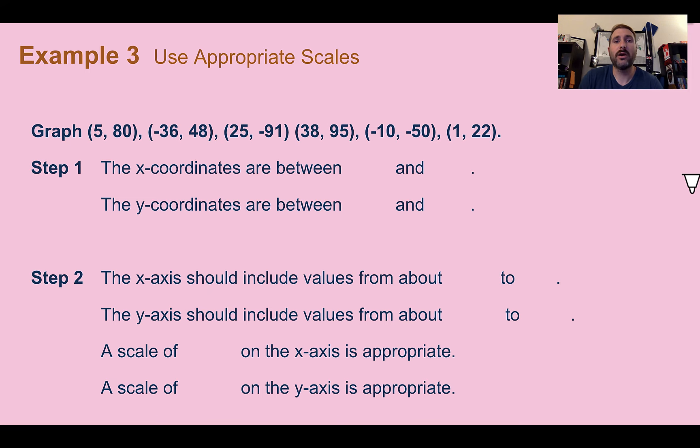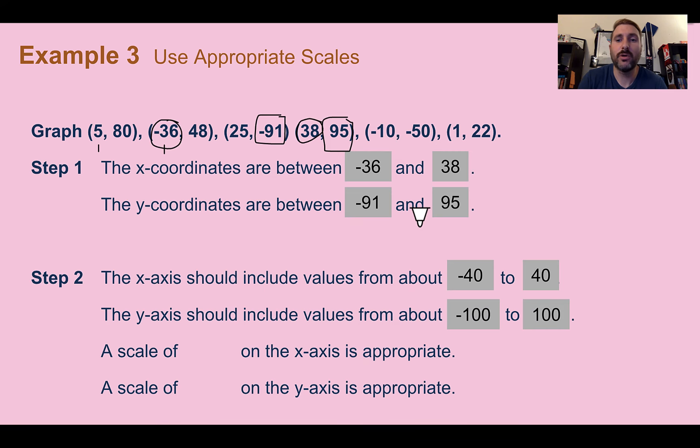Step 1, figure out what the x and y coordinates are between. So the x coordinates, that first number there, we have negative 36 is our lowest value and positive 38 is the largest value. For our y values, our lowest is at negative 91 and our greatest is at 95. So we need to make sure going up and down that we are able to fit both of those in. So deciding an appropriate scale, we're going to make it the next largest value in both directions. I can make my x axis go between negative 40 and positive 40. And for the y coordinates, let's do negative 100 to positive 100.